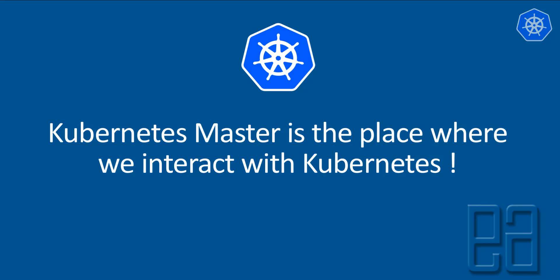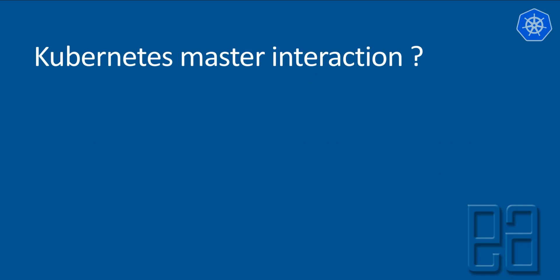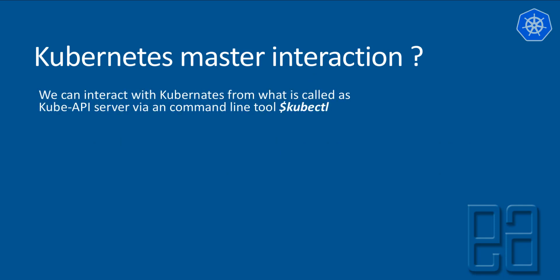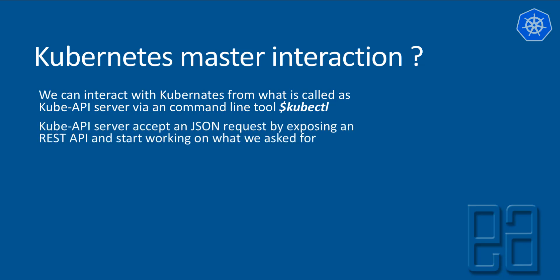We can interact with Kubernetes through what is called the kube API server, via a command line tool called kubectl. The kubectl is something we installed in our previous video, where I showed how you can get nodes and pods. This command line utility talks with the kube API server on the master which is already running.